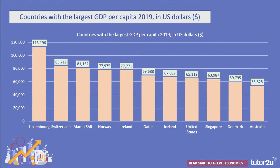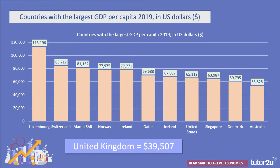Here's the data for countries with the largest GDP per head in 2019, expressed in US dollars. Luxembourg and Qatar are right up there, along with Switzerland, Macau — the special administrative region of China — Norway, and Ireland, which has a very high per capita income measured in US dollars. You'll notice that the UK does not appear in this list; the UK's per capita income in dollar terms was $39,507 in 2019.